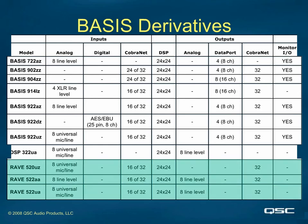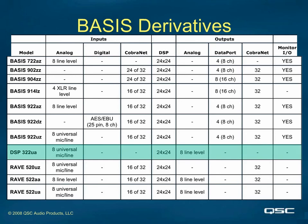The last three in the list are designated as RAVE models, since they closely align with our legacy RAVE devices. The legacy RAVE units were merely CobraNet IO boxes, while the new models add full DSP along with relays, Logic IO, and Omniports. One unit, fourth from the bottom, is the DSP322UA — very much like our DSP3, DSP4, and DSP30 devices. It is essentially an 8-in by 8-out DSP box with no CobraNet and no data ports to control and monitor the amplifiers.